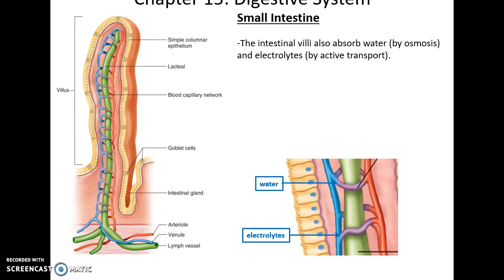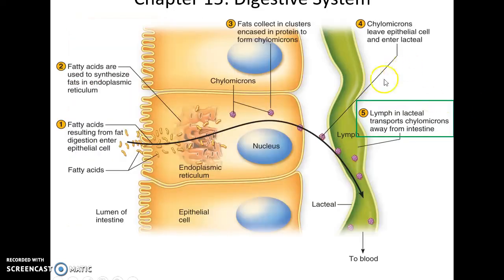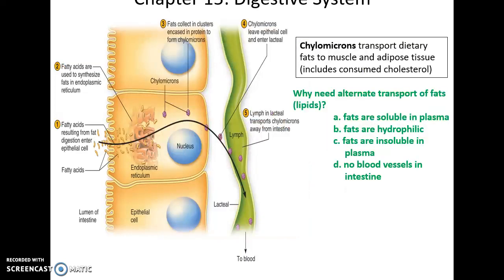Water can also pass through by osmosis. Electrolytes can enter and pass through the epithelial cells by transport. The fatty acids, on the other hand, tend to have a slightly different route. They get brought in by active transport or diffusion into the epithelial cells. These are lipids, so they are hydrophobic. They end up first getting broken down further by the smooth endoplasmic reticulum and then get packaged with proteins forming structures called chylomicrons. It's these chylomicrons — proteins surrounding the fatty acids — that then get sent into the lacteals of the lymphatic system. It's now part of the lymphatic system and then gets carried eventually to the bloodstream.